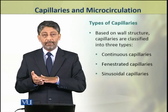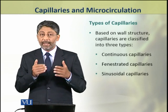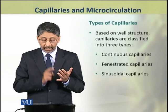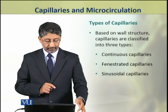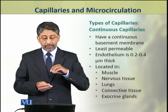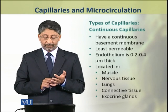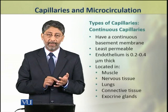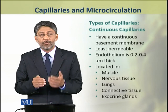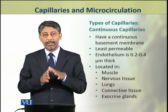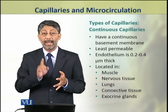Due to differences in permeability and their endothelium structure, there are three major types of capillaries: continuous, fenestrated, and sinusoidal capillaries. Continuous capillaries have a continuous basement membrane and are the least permeable capillaries. Their endothelium is about 0.2 to 0.4 micrometers thick. They are located in muscles, nervous tissue, lungs, connective tissues, and exocrine glands.